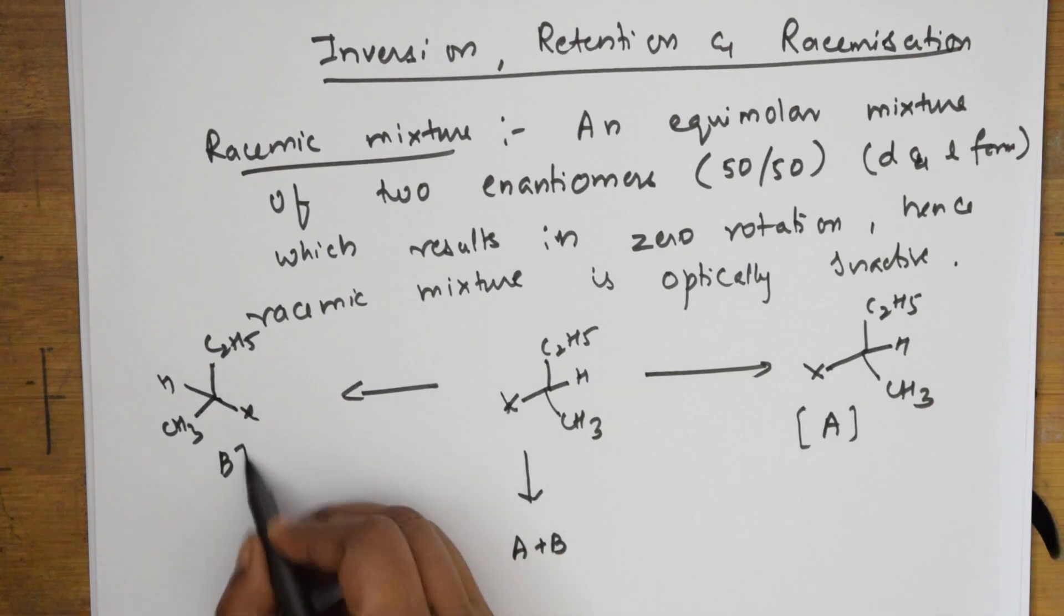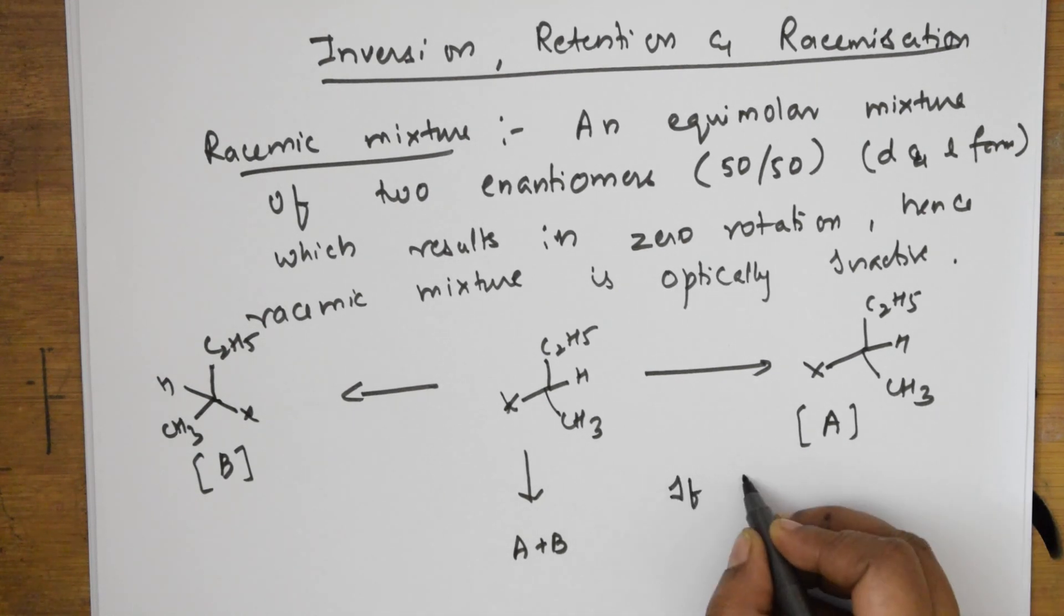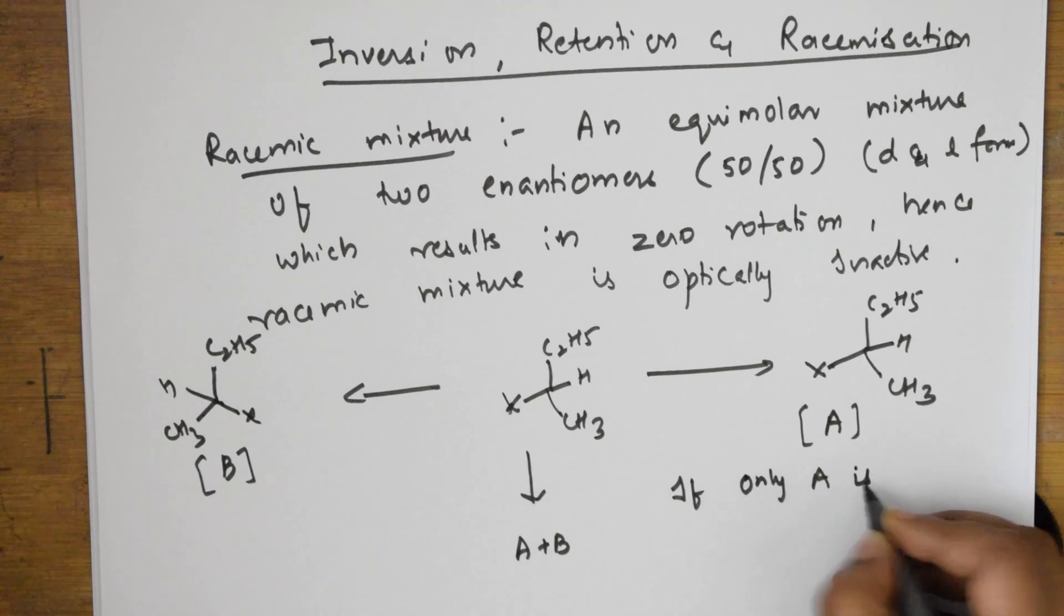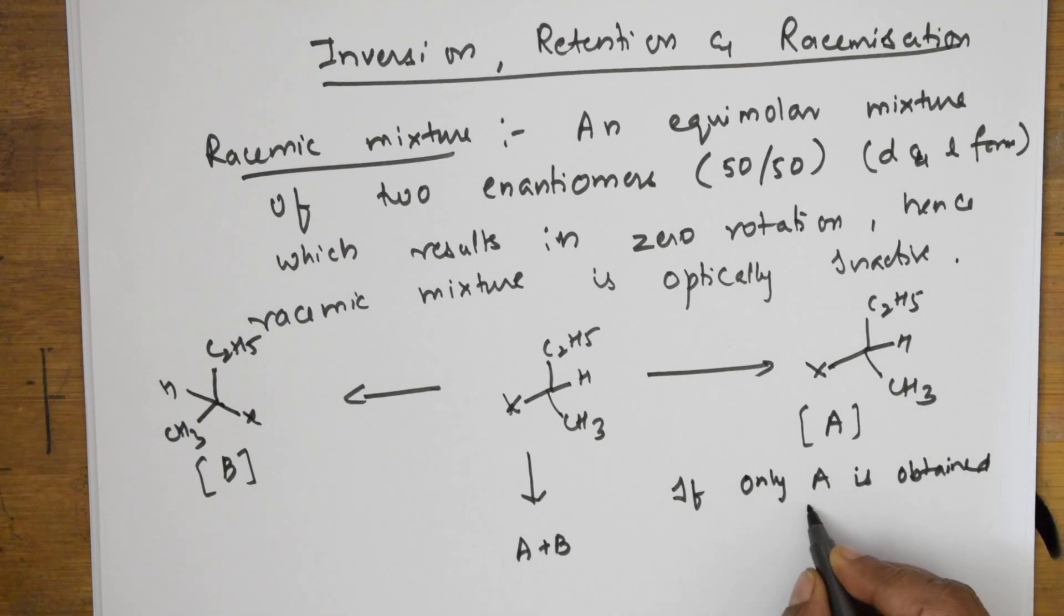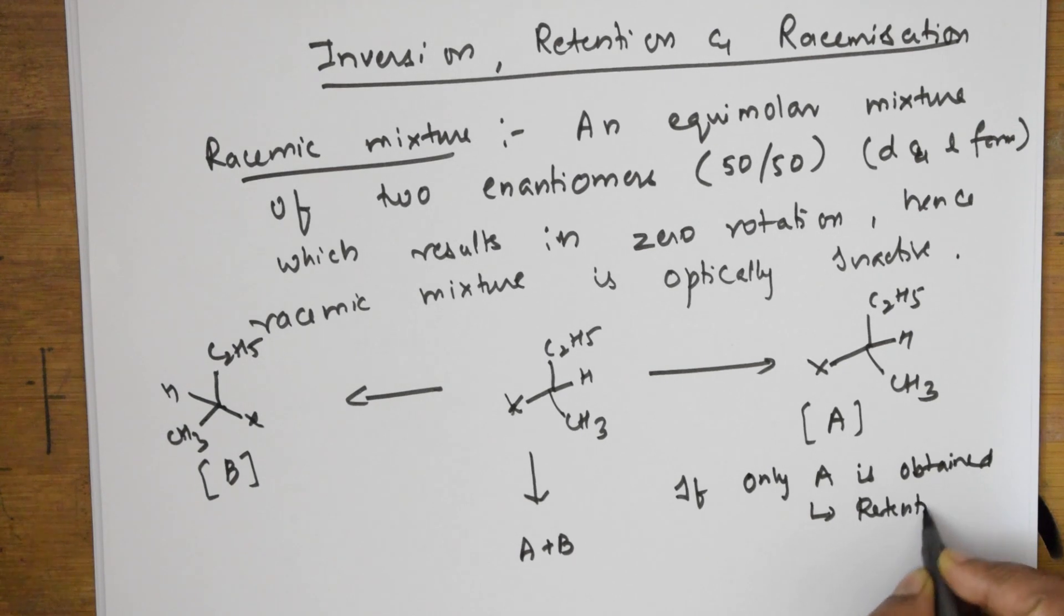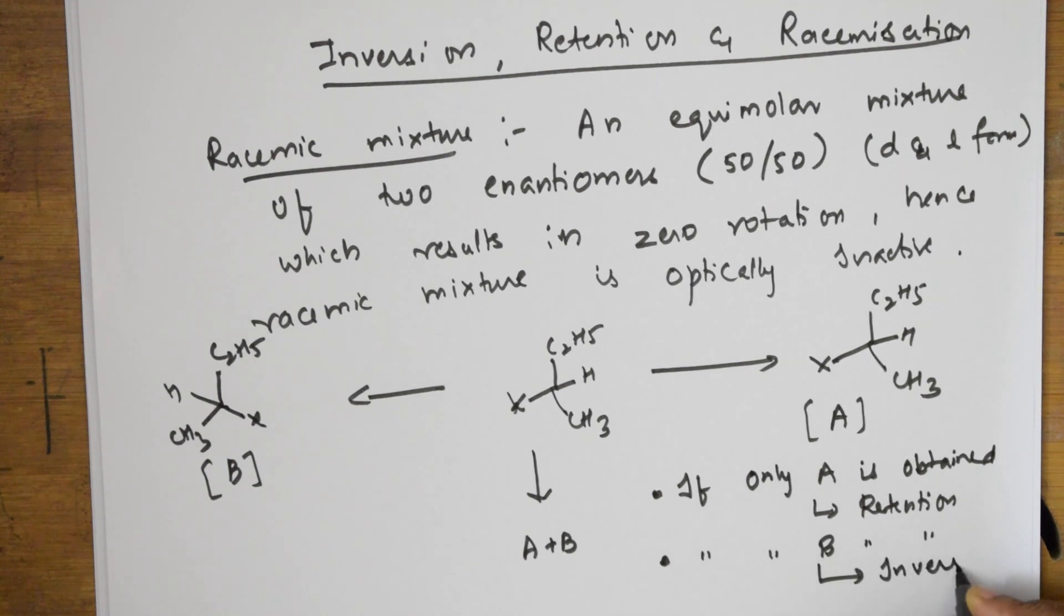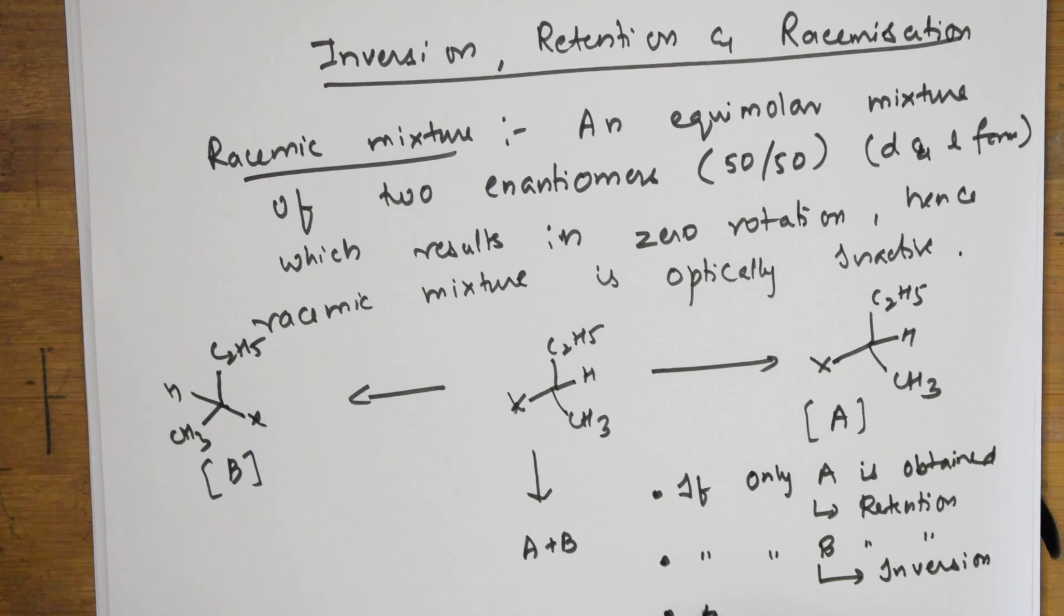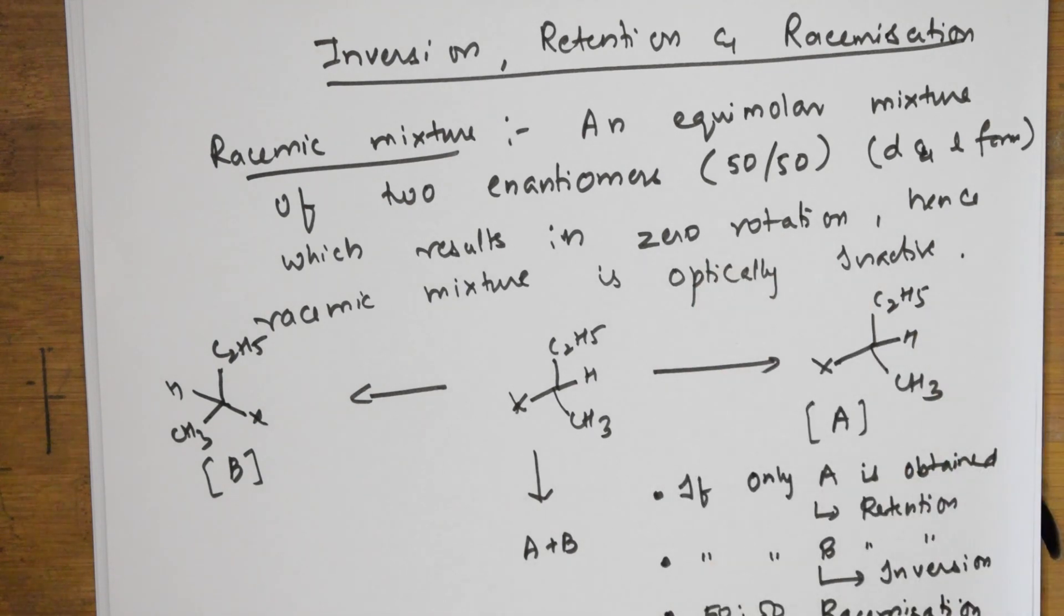For a particular molecule, if only A is obtained, we call it as retention. If only B is obtained, we call it inversion of configuration. If I get 50 to 50 mixture of both, then I call it as racemization. Racemization has zero optical activity because they get cancelled.